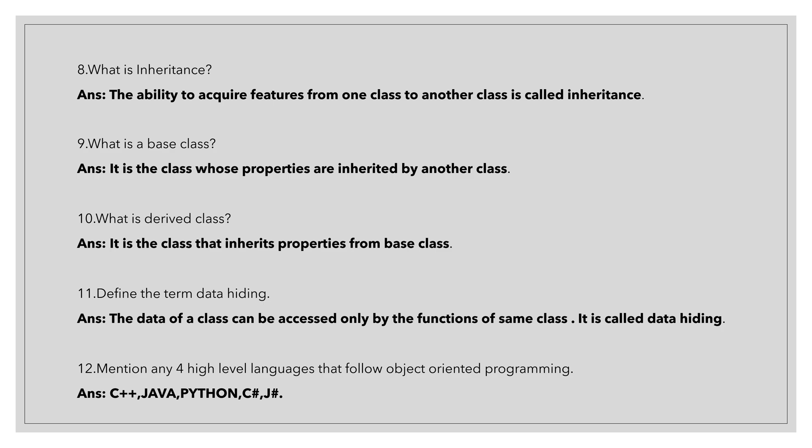Eleventh question is, define the term data binding. Data of a class can be accessed only by the functions of the same class, called as data binding. The last question is, mention any four high-level languages that follow object-oriented programming. The answer is C++, Java, Python, C sharp and J sharp. These are all the one mark questions.